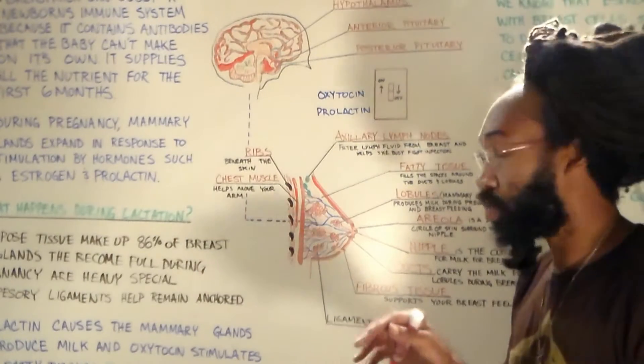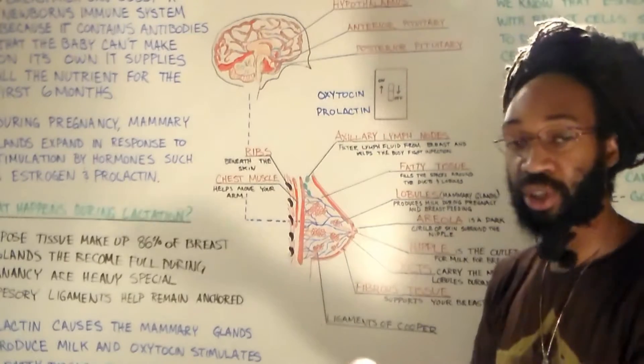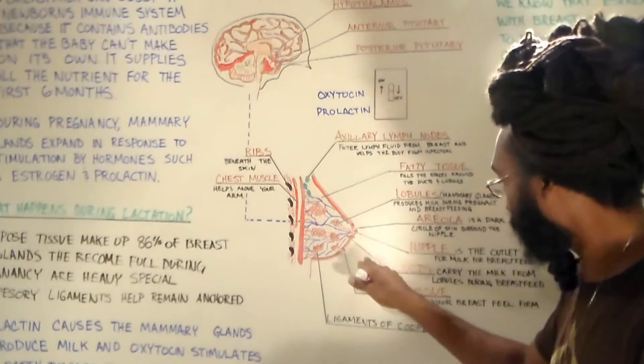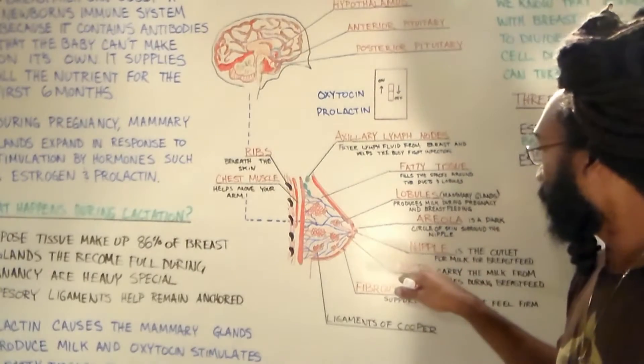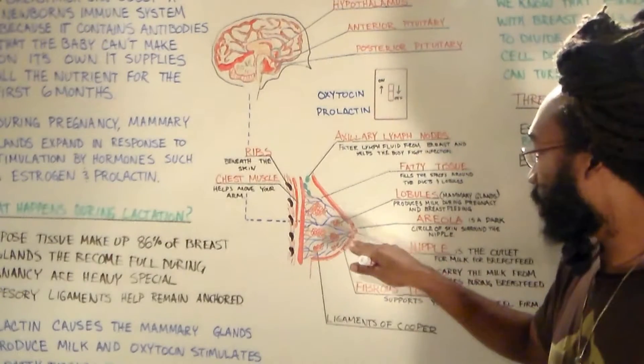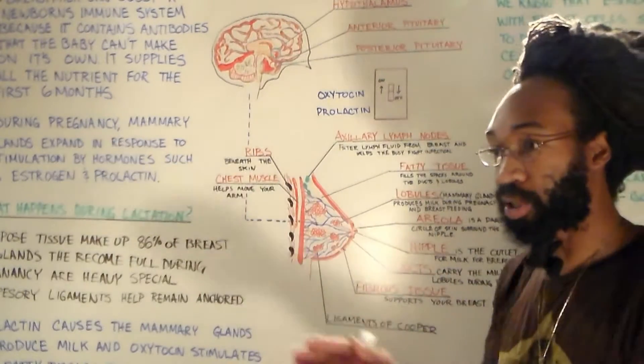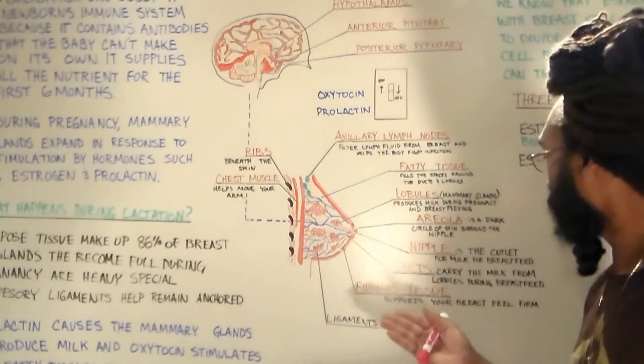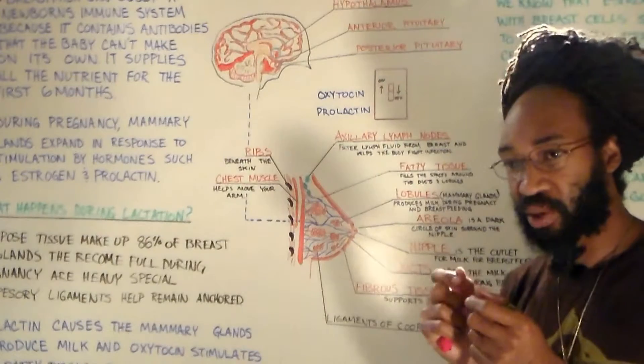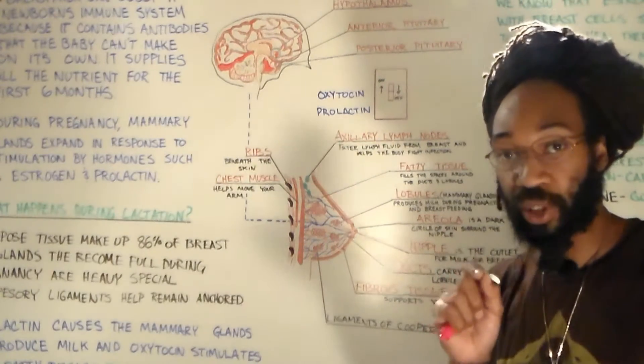So it can push the milk into these little bitty ducts, these little ducts called lactiferous ducts. Now these lactiferous ducts are able to go towards the nipple. This is how the outlet of the nipple comes. It has these little micro stuff and you can't even see the little pores that's inside of the nipples but they are there. That's how it comes out.